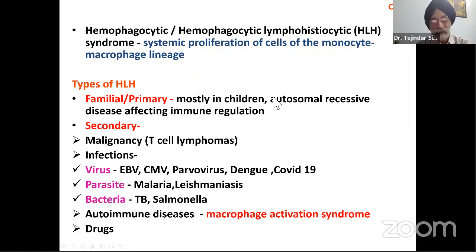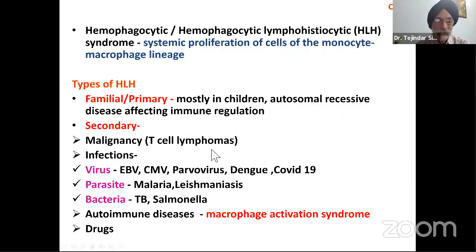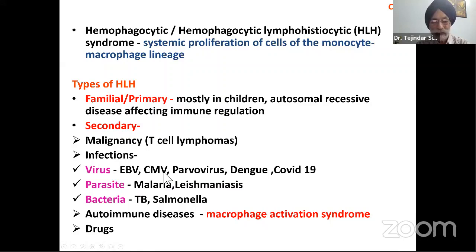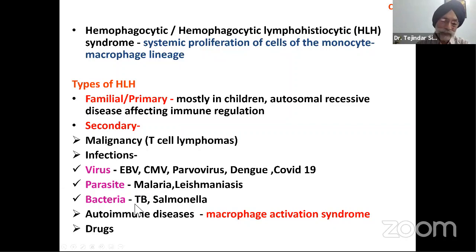Now, what are the causes? HLH may be associated with malignancies, especially T-cell lymphomas. Infections could be viral — EBV, CMV, parvovirus, dengue, and even COVID-19 can give rise to this. Parasitic causes include malaria and leishmaniasis. Multiple bacteria, including tuberculosis, can give rise to hemophagocytic syndrome. This is also associated with autoimmune diseases; in those cases it is labeled as macrophage activation syndrome.